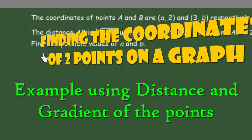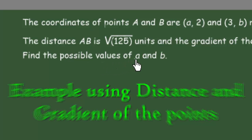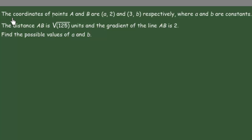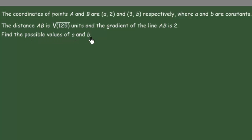Hi guys! In this video we're going to find the possible values of the constants A and B. Our exercise stipulates that the coordinates of points A and B are (A, 2) and (3, B) respectively, where A and B are constants, and the distance between these two points is the square root of 125 units, and the gradient of the line AB is 2.